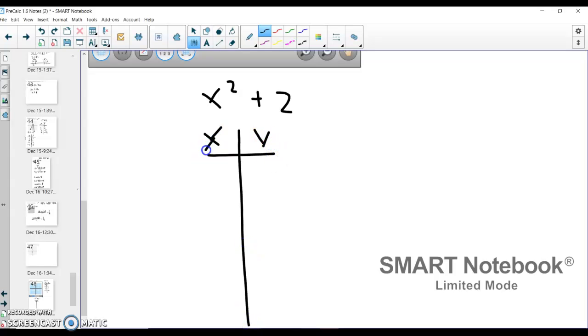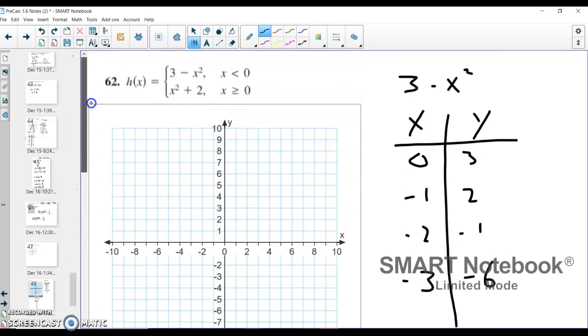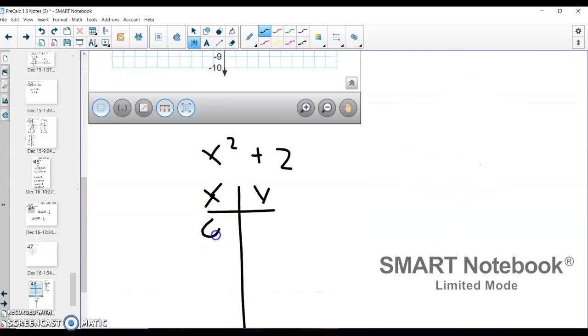Again, I'm going to choose x values in my given domain. So I'm going to have 0 and anything greater than 0. And in this graph, I'm going to include 0 with a closed dot, because 0 is actually in my domain. So I have 0 and anything greater, so let's do 0, 1, 2, and 3.